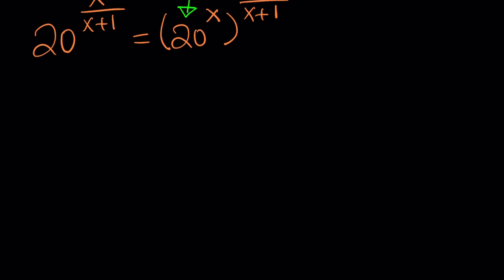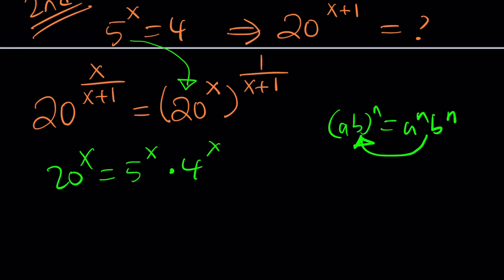20 can be written as 5 times 4. So we can basically write this as 5 to the power x times 4 to the power x. We have a really nice property of exponents, by the way. If you have ab to the n, it's a to the n, b to the n. And if you have a to the n, b to the n, it can be written like that. So it works both ways. Make sense? And how is that going to help us?